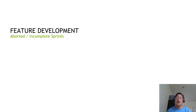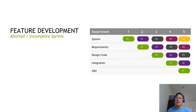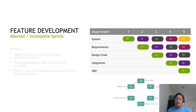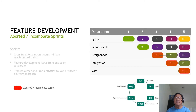Contingency planning should typically account for aborted or incomplete sprints. For example, if design and coding were not completed in a given sprint, there is a delay of one sprint. Delays like this tend to propagate to the validation phase.